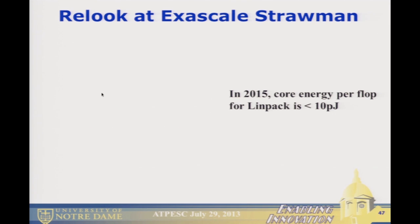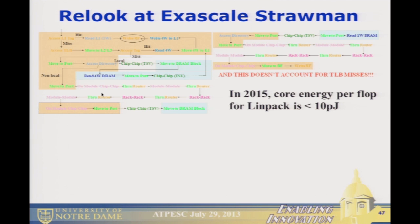This is the path when one of those cores needs to access something in memory. There are lots of cases: what happens if it's in L1, in L2, in L3, whether you have to go off-chip to a router, to another node, and so on. There's an incredibly large number of cases, and I didn't even include what happens on a TLB miss.